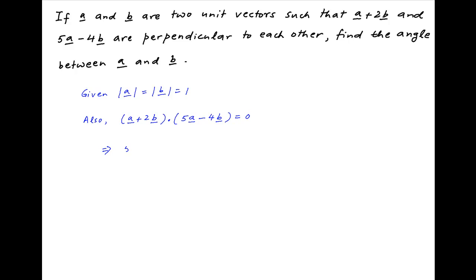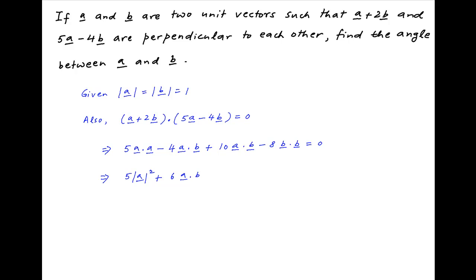Opening up the left hand side, we have 5 times a dot a, minus 4 times a dot b, plus 10 times a dot b, minus 8 times b dot b, is equal to 0. This implies that 5 times the absolute value of vector a squared, plus 6 times a dot b, minus 8 times the absolute value of vector b squared, is equal to 0.